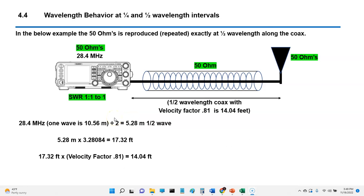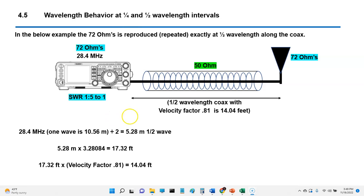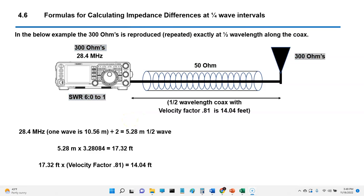So what happens at a half-wavelength? We repeat the impedance variable. So if we have 50 ohms, it gets repeated. 72 ohms is repeated. 300 ohms is repeated.